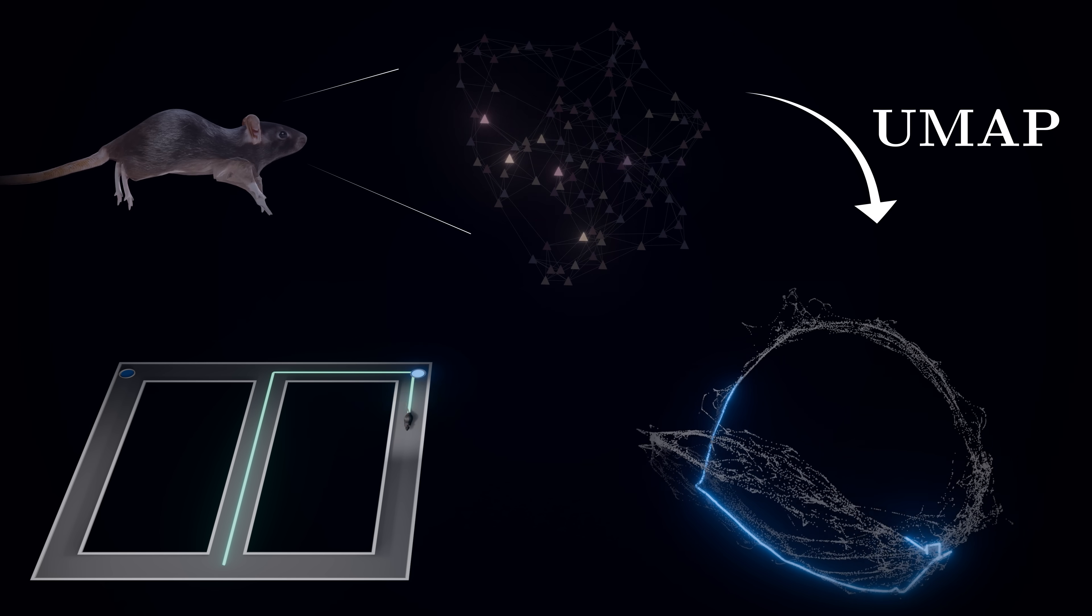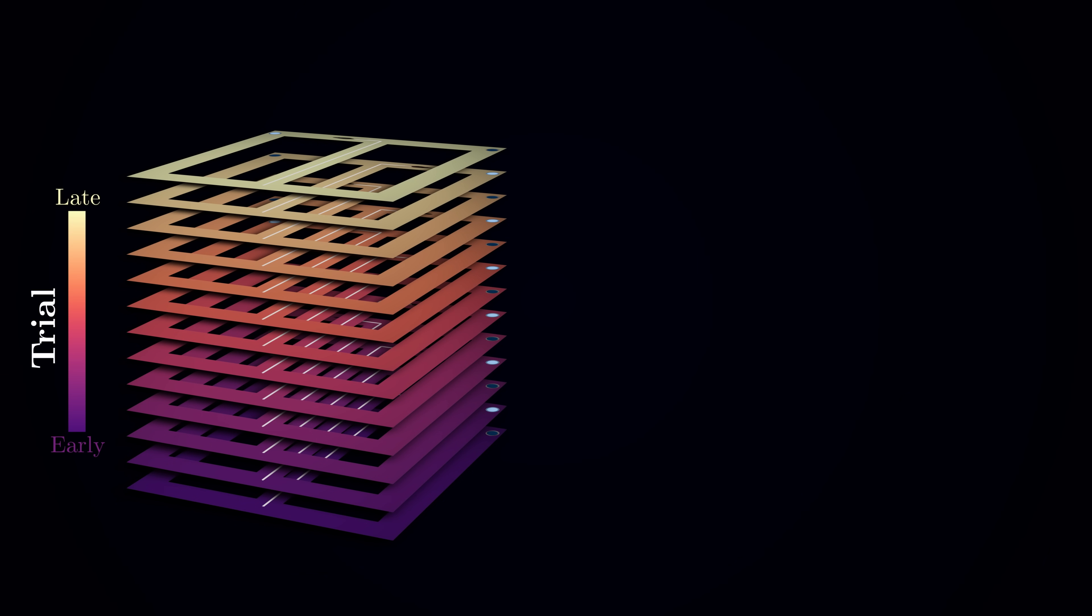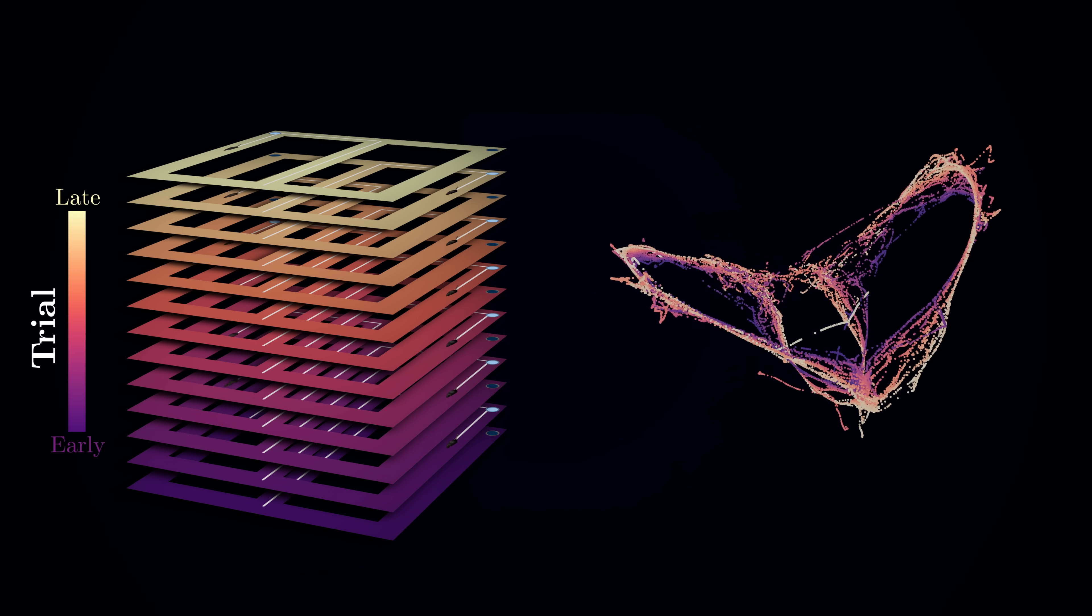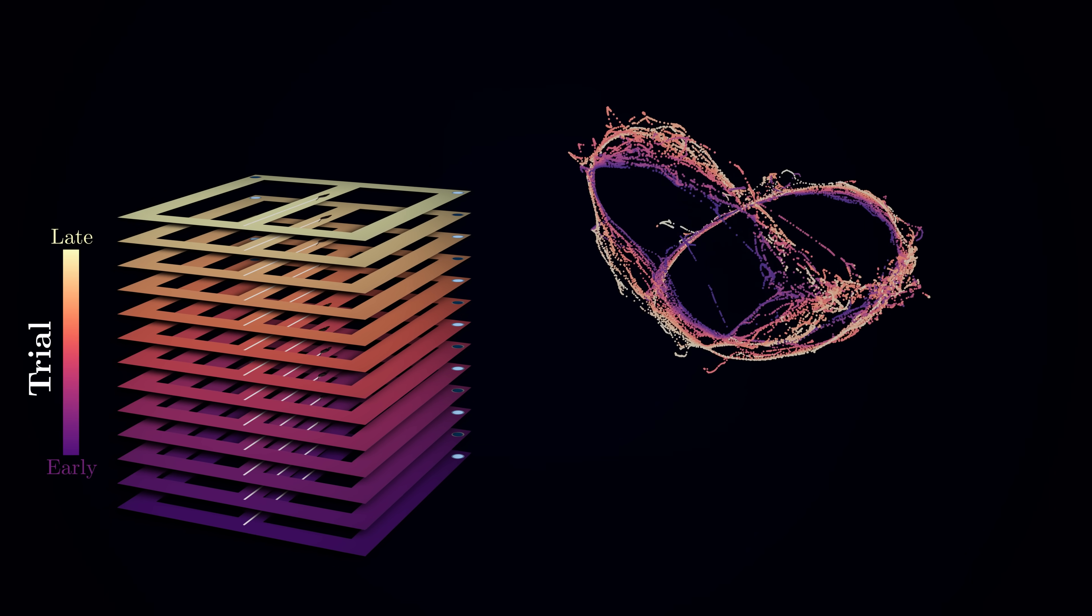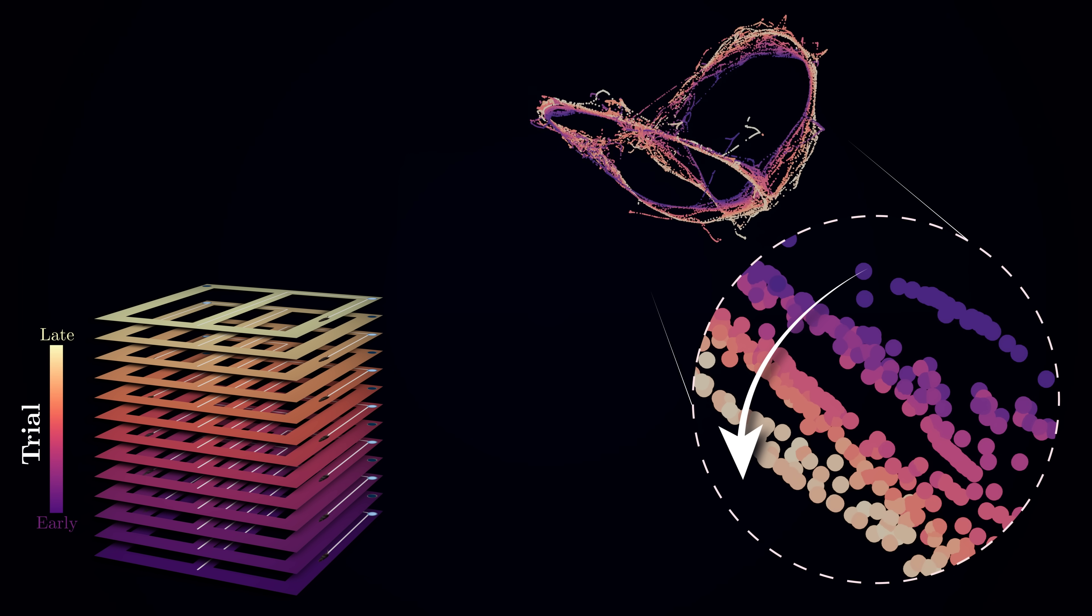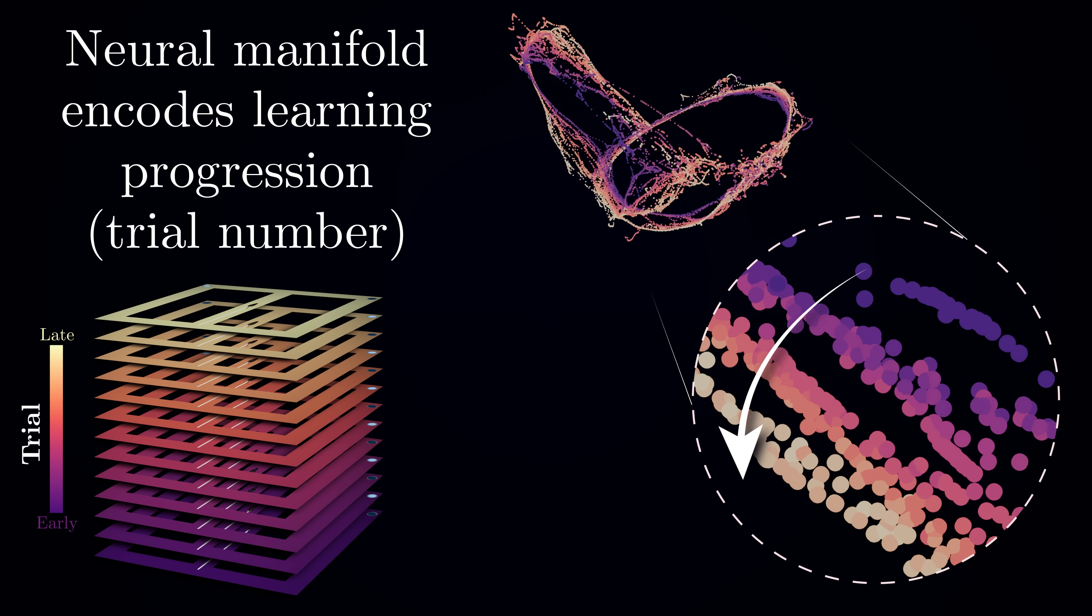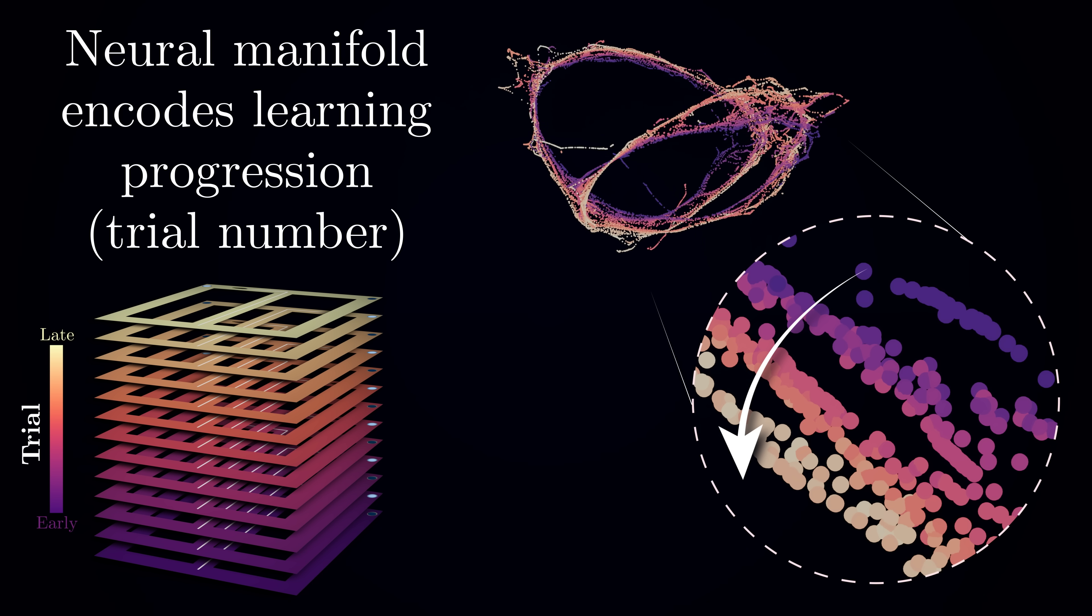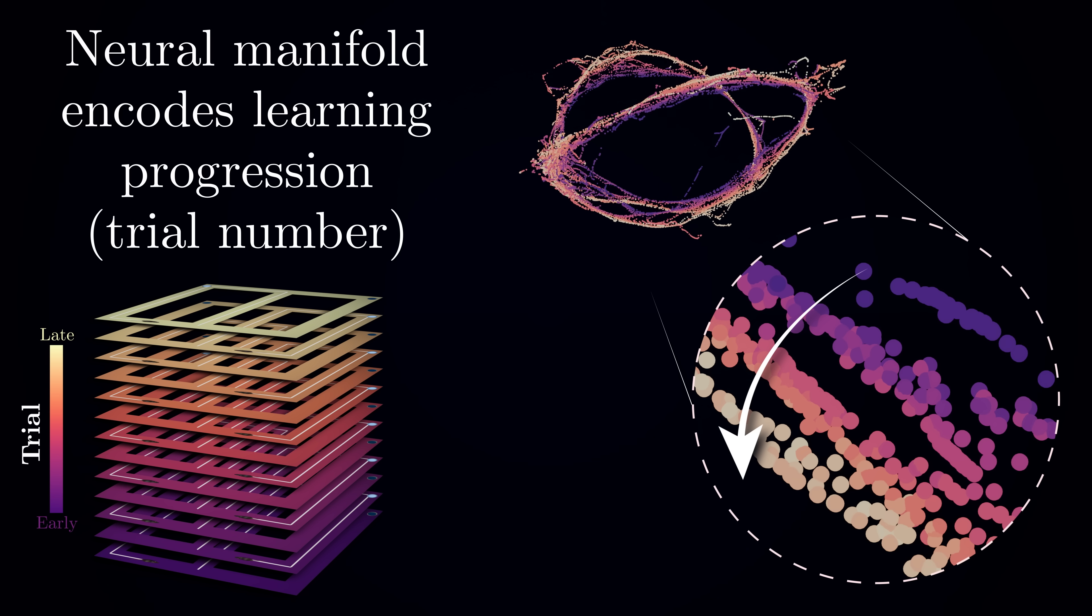But the spatial location is just one dimension of this task. What about the animal's learning progress across trials? When we color the same points by trial number instead of position, we see another layer of structure emerge – changes that reflect the learning progression. This means that the brain's activity patterns are changing in a systematic way as the animal gets better and better at the task, creating a clear trajectory through this neural space.